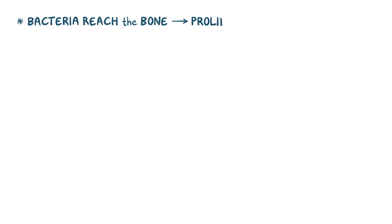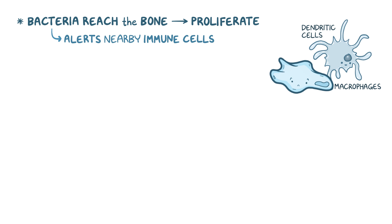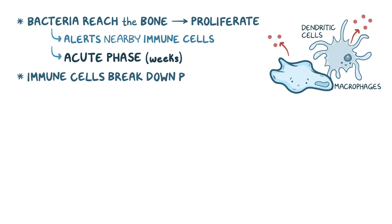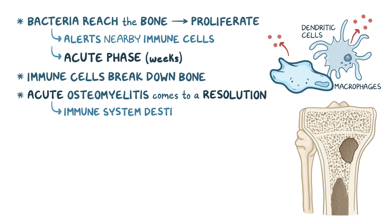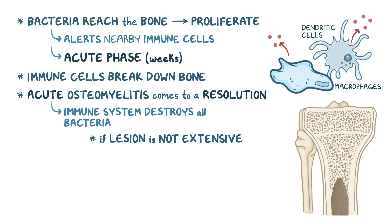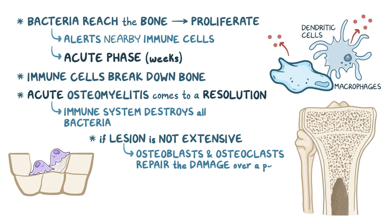Once the bacteria reach the bone by any of these routes, they start to proliferate. This alerts nearby immune cells — specifically dendritic cells and macrophages — that try to fight off the infection. This represents the acute phase of the disease and occurs over a course of weeks. The immune cells release chemicals and enzymes that break down bone and cause local destruction. Usually acute osteomyelitis comes to a resolution, meaning the immune system eventually destroys all of the invading bacteria, and if the lesion is not that extensive, the osteoblasts and osteoclasts begin to repair the damage over a period of weeks.